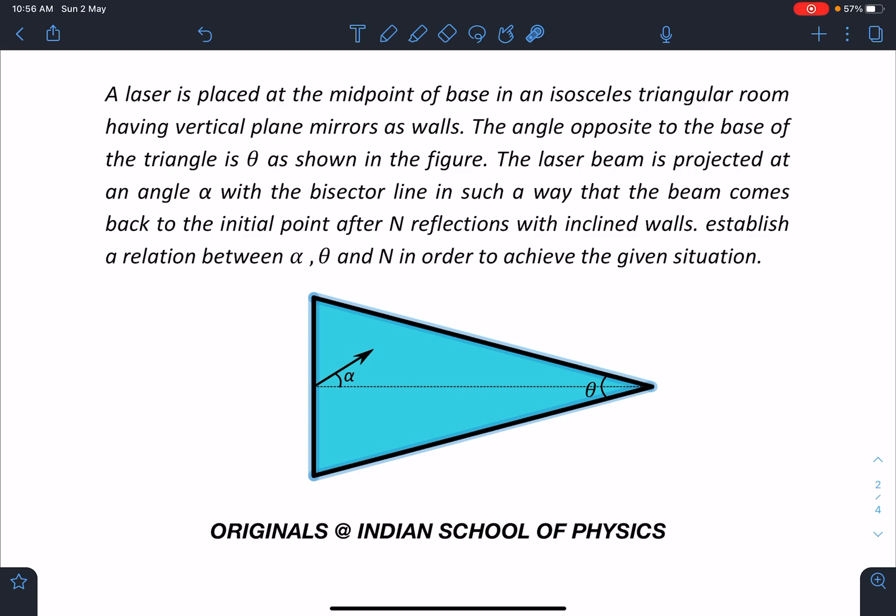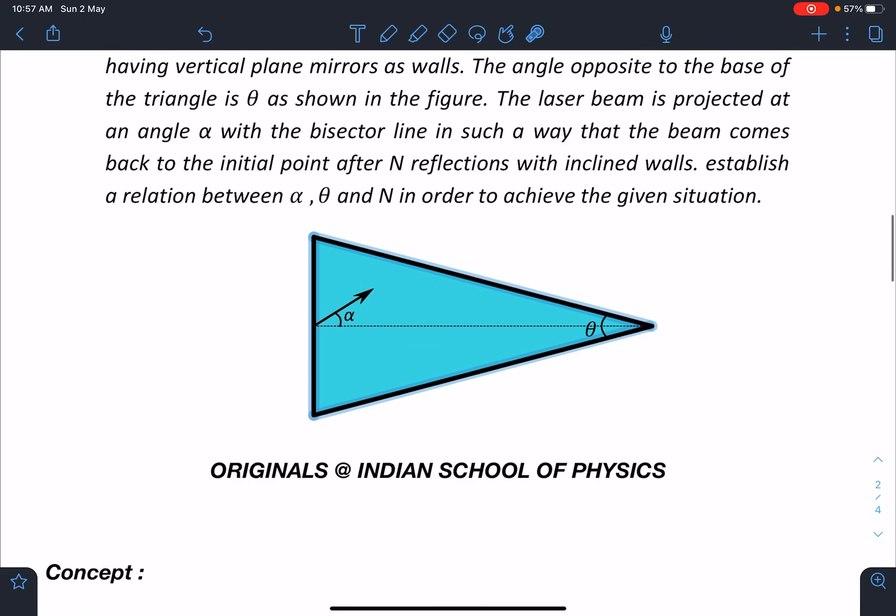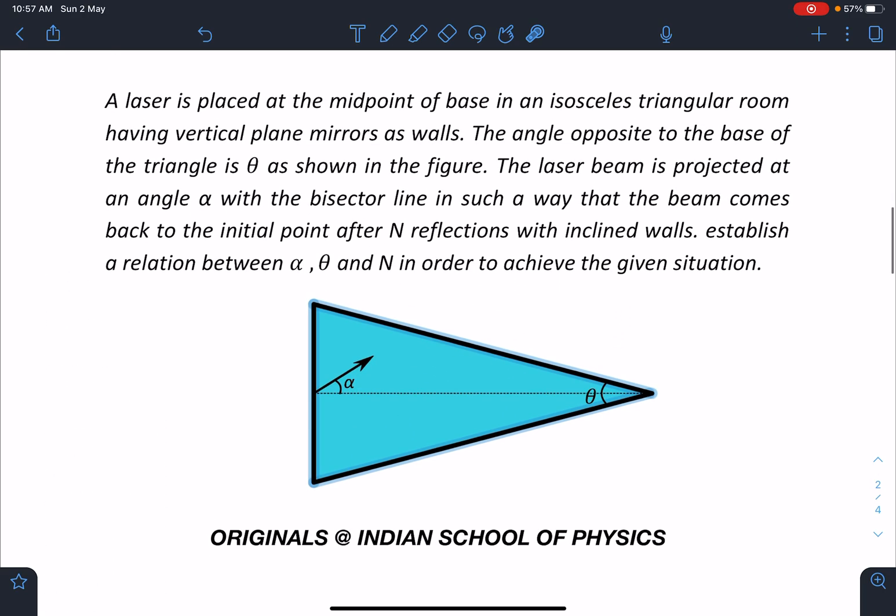The laser beam is projected at an angle α with the bisector line in such a way that the beam comes back to the initial point after N reflections with the incline walls. Establish a relation between α, θ, and N in order to achieve the given situation.